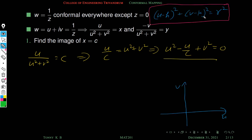This is the general equation of a circle in the uv-plane: (u - h)² + (v - k)² = r². Comparing terms, k = 0 since there is no linear v term. To find h, we expand and compare: -2uh corresponds to -u/c, so 2h = 1/c, giving h = 1/(2c).